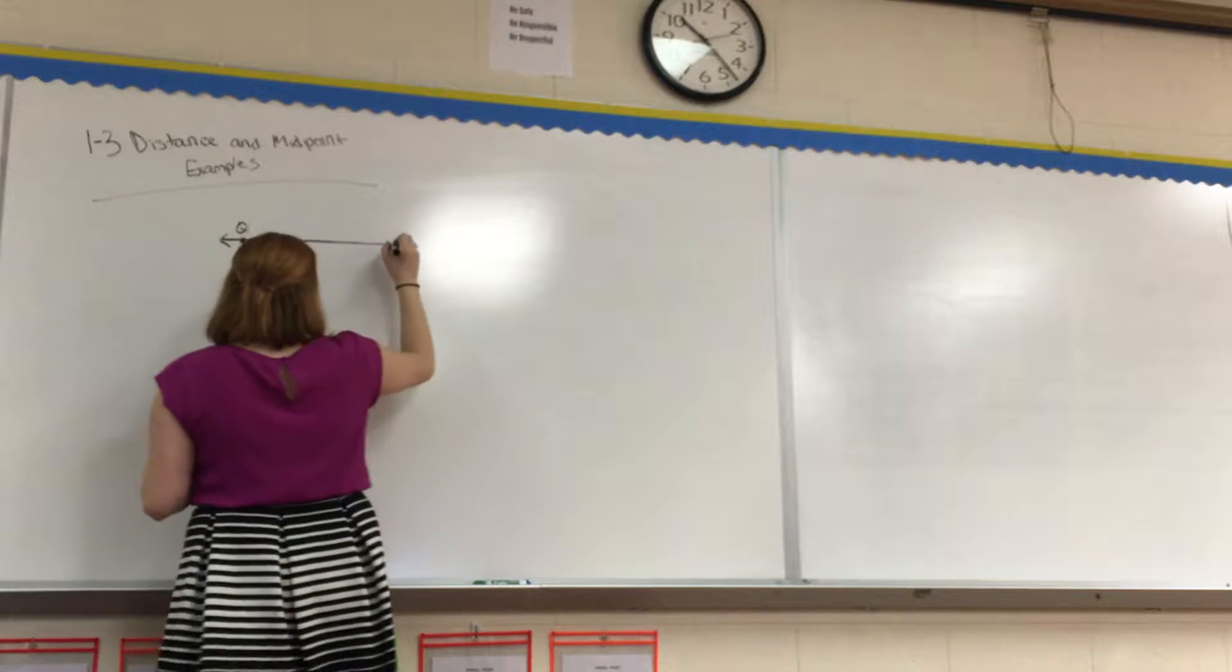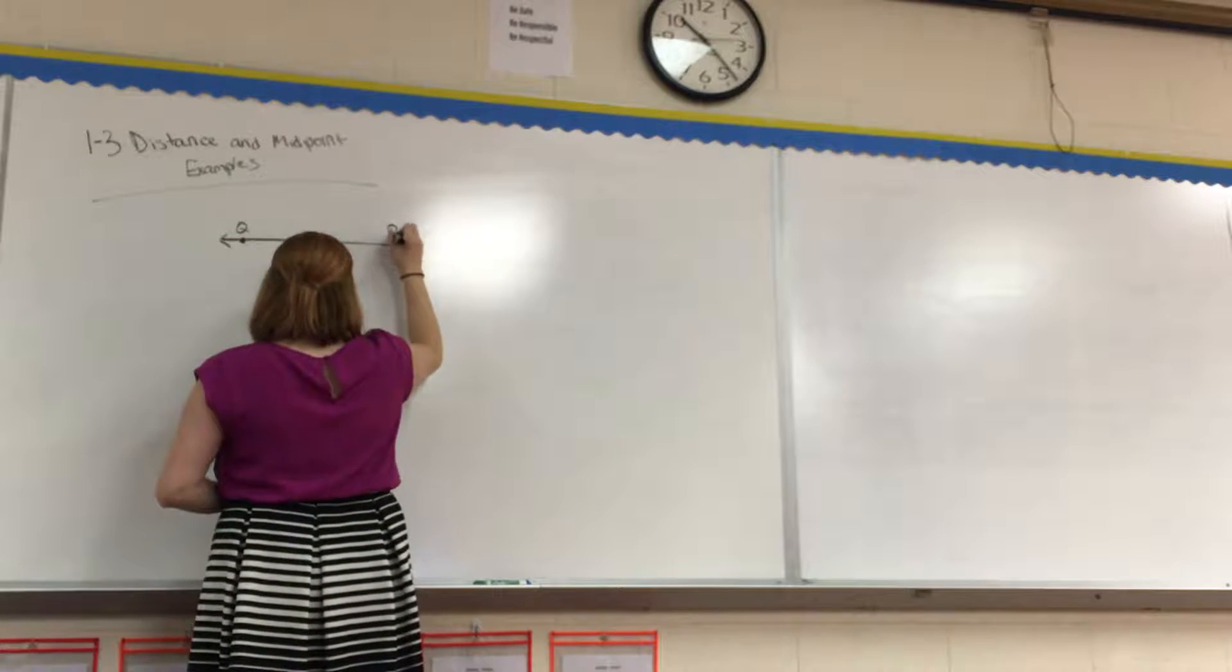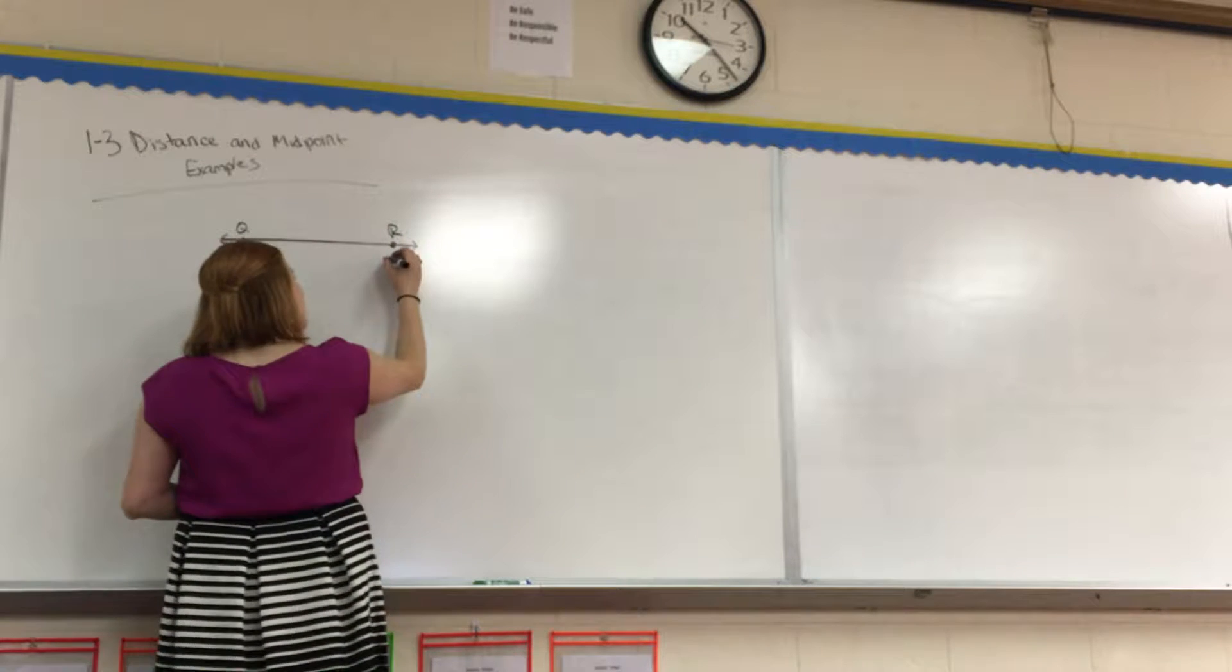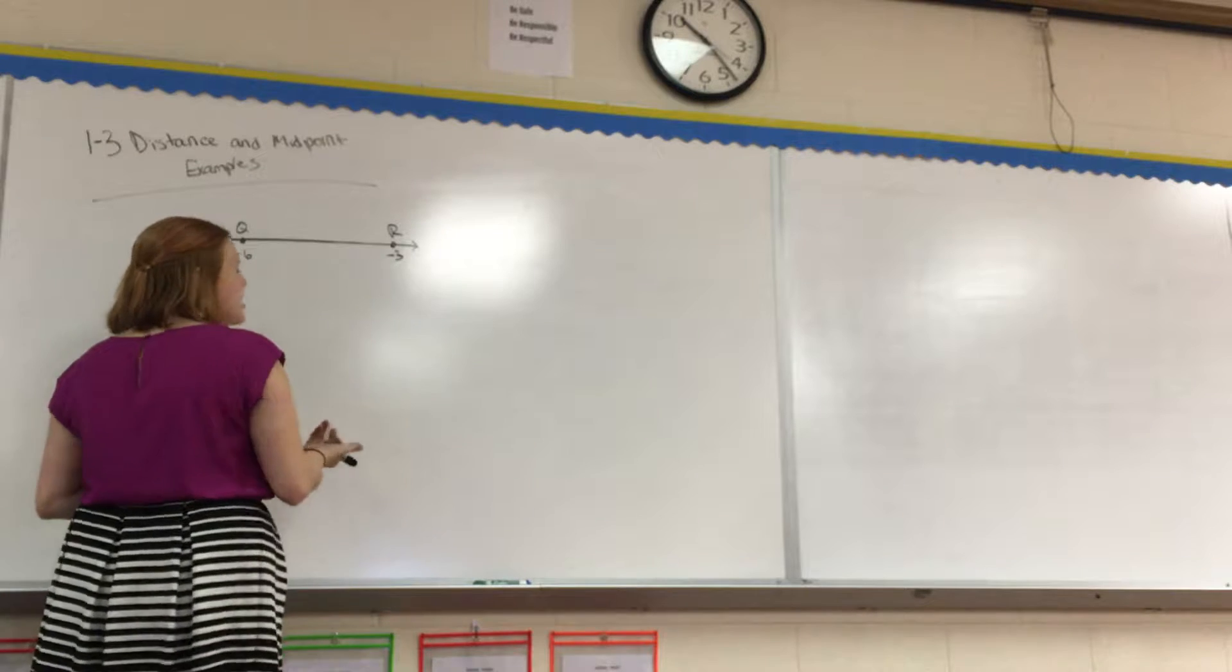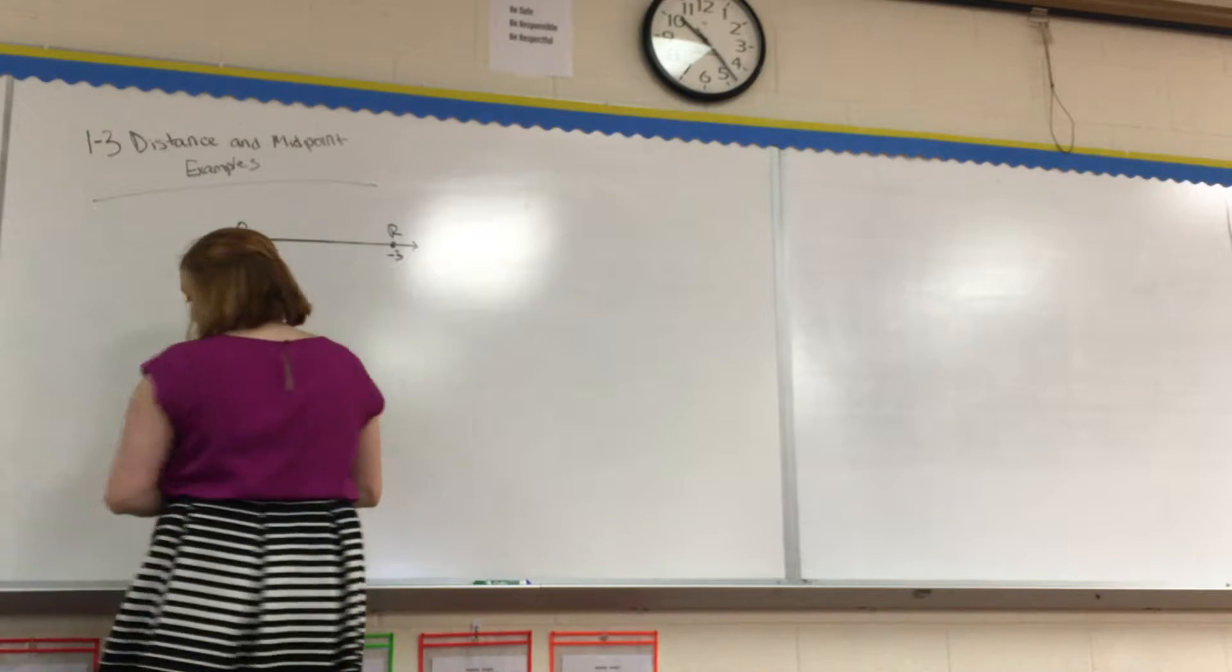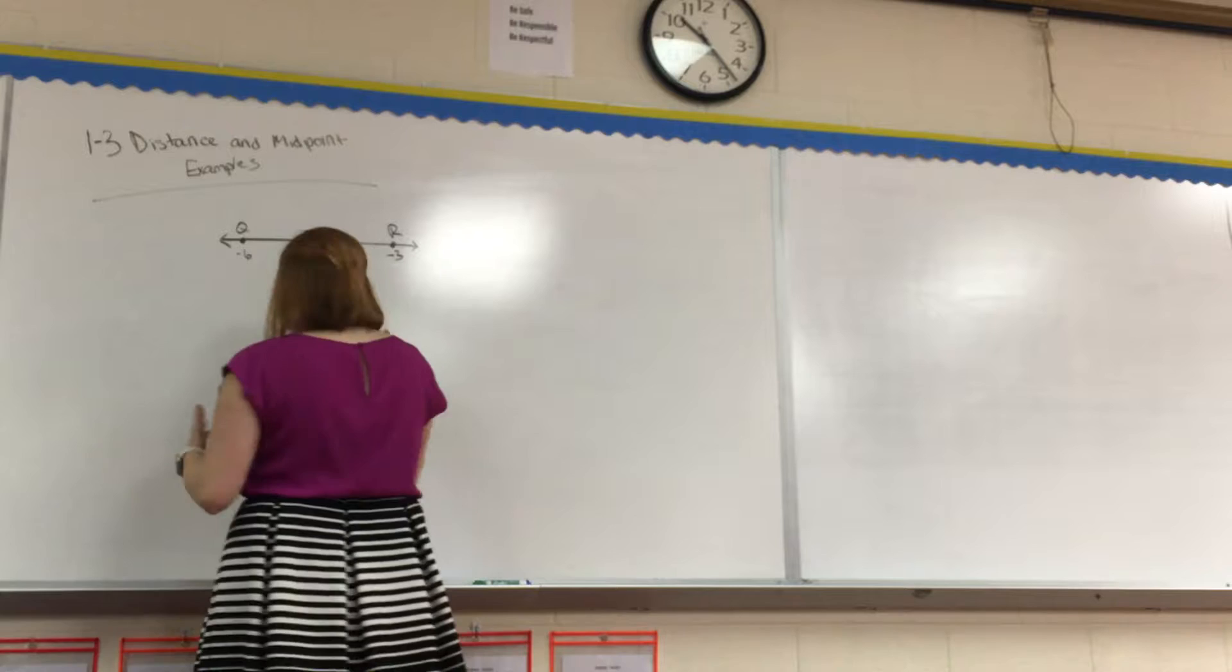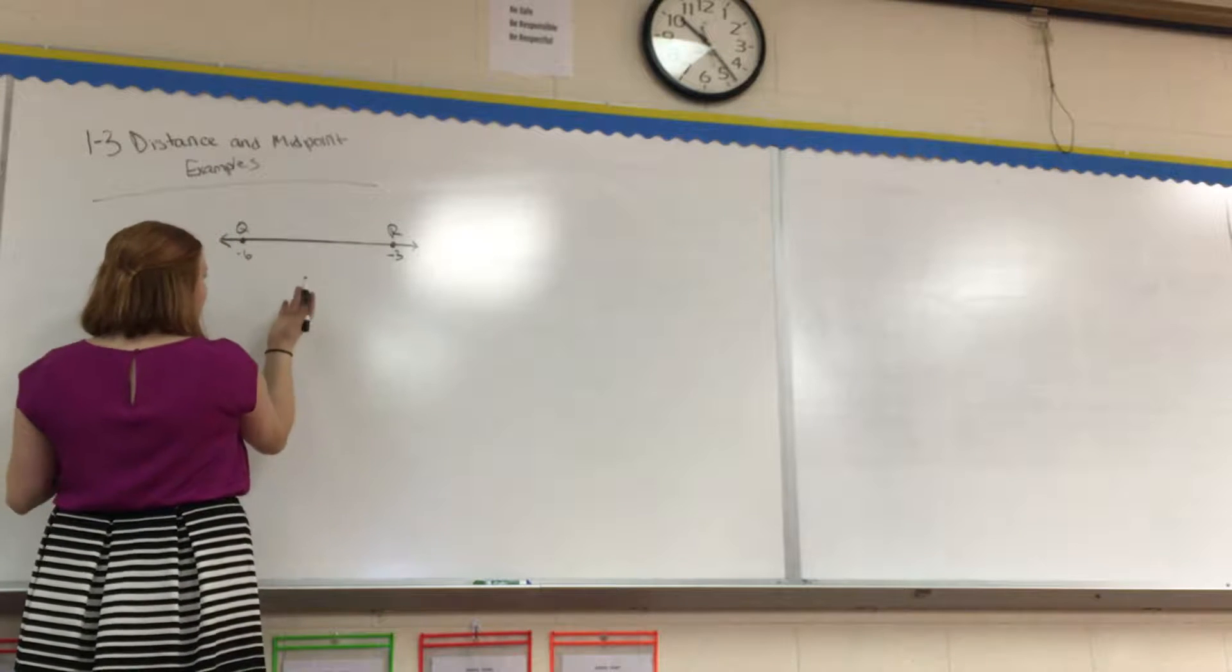So we have point Q right here, and we have point R right there. R is at negative 3, and Q is at negative 6. This is probably a pretty easy example. You guys probably know already how to solve it, but let's do it how we learned in the formula.